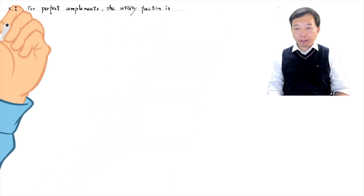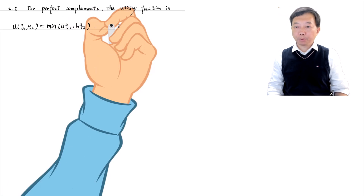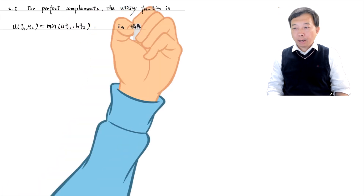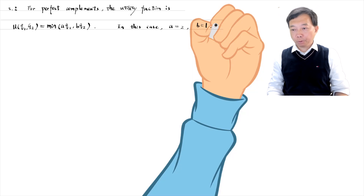For perfect complements, the utility function is the minimum of A·Q1 and B·Q2. In this case, Q1 is bananas and Q2 is cereal. A equals 2 and B equals 1. The reason is that half a sliced banana Q1 or one bowl of cereal Q2 gives the consumer the same utility if they are used together.